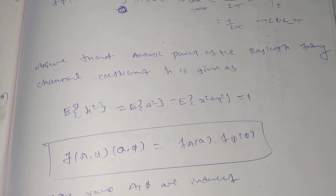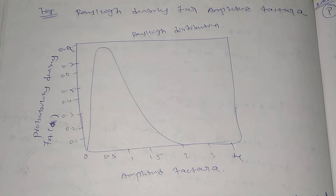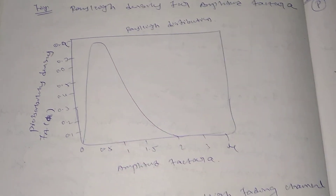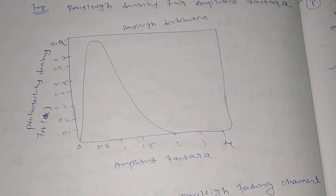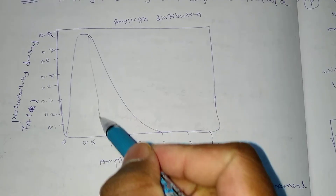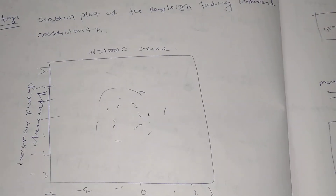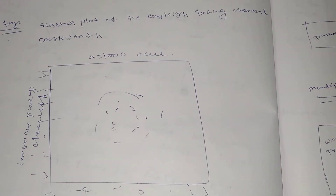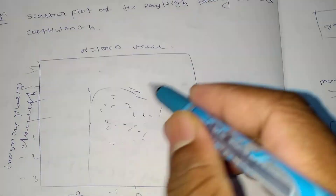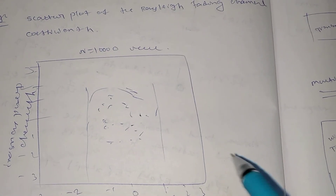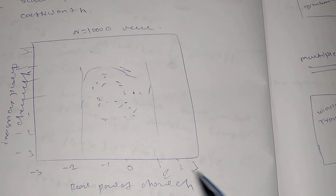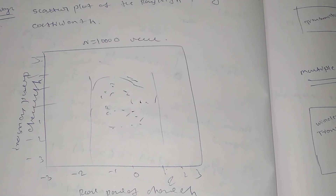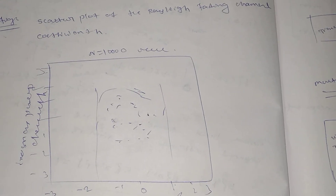This completes the derivation of the Rayleigh fading distribution. The graphs show the Rayleigh density for amplitude factor a: density on the y-axis and amplitude on the x-axis, with maximum probability around a = 1. A scatter plot of the Rayleigh fading channel coefficient h using 10,000 samples shows a circular distribution between approximately −2 and +2 for both real and imaginary parts. This is how we can characterize a Rayleigh fading channel using equations and graphs. Thank you for watching.